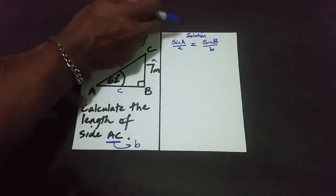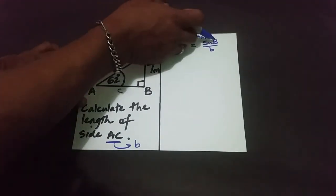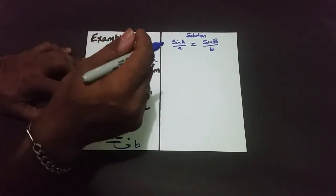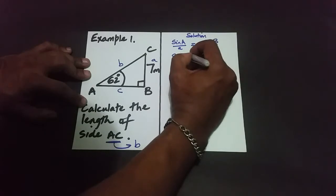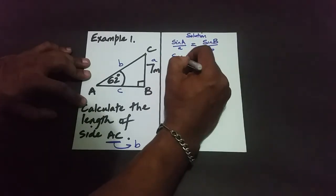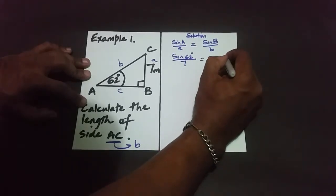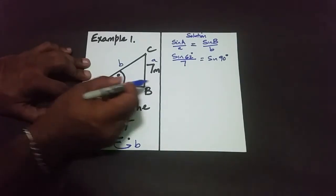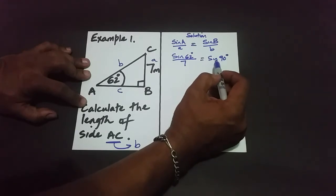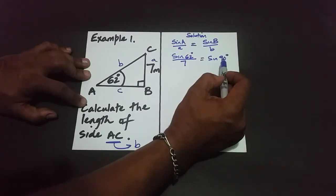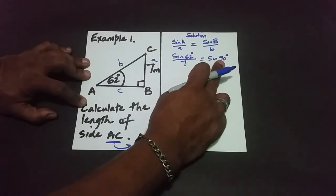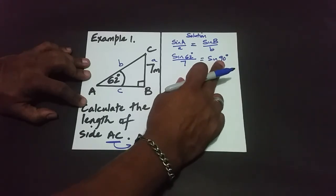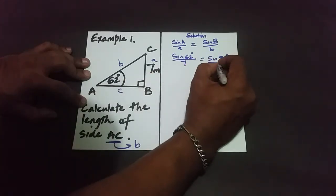We now plug in the values. You have four pieces of information — angle, length of side, angle, length of side — and you must have three available pieces to solve. Angle A is 62 degrees over little a which is 7, and angle B is 90 degrees over little b. Note: unlike trig ratios, the sine rule allows 90 degrees to be used in the calculation.